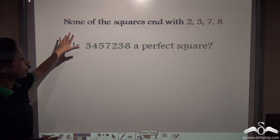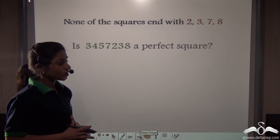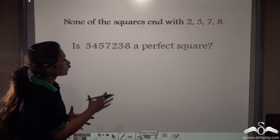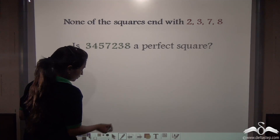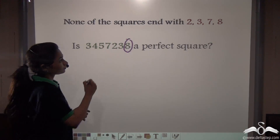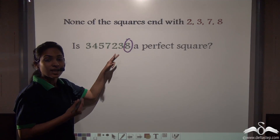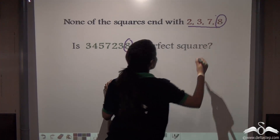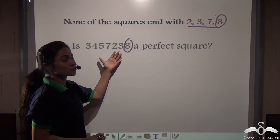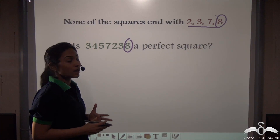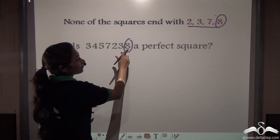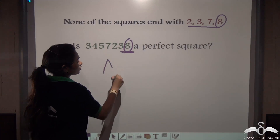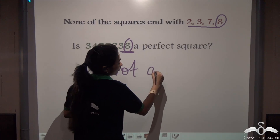None of the squares end with 2, 3, 7, and 8. Just looking at a number can tell you whether it is a perfect square or not. See the unit digit — it is 8, and we have seen that no square number ends with 2, 3, 7, or 8. So you don't have to take out the square root of this number. For large numbers like this, if they have 2, 3, 7, or 8 in the unit digits, you can directly answer that it is not a perfect square.